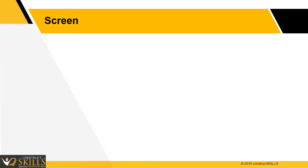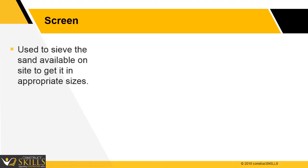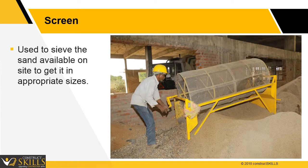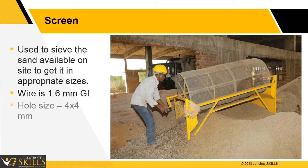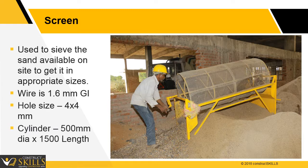Screen: used to sieve sand on construction sites to get sand of the appropriate size for particular use. Usually 1.6 millimeter GI wire of hole size 4 by 4 millimeters is used. The sieve cylinder is usually 500 millimeters in diameter and 1500 millimeters in length.